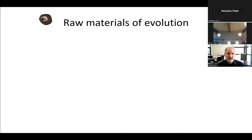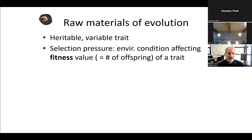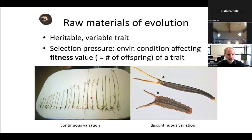The raw materials of evolution are a heritable variable trait and selection pressure. Selection pressure is an environmental condition that affects the fitness value or number of offspring related to a trait. You can have continuous variation, as in this example with a Poa species increasing in height continuously.